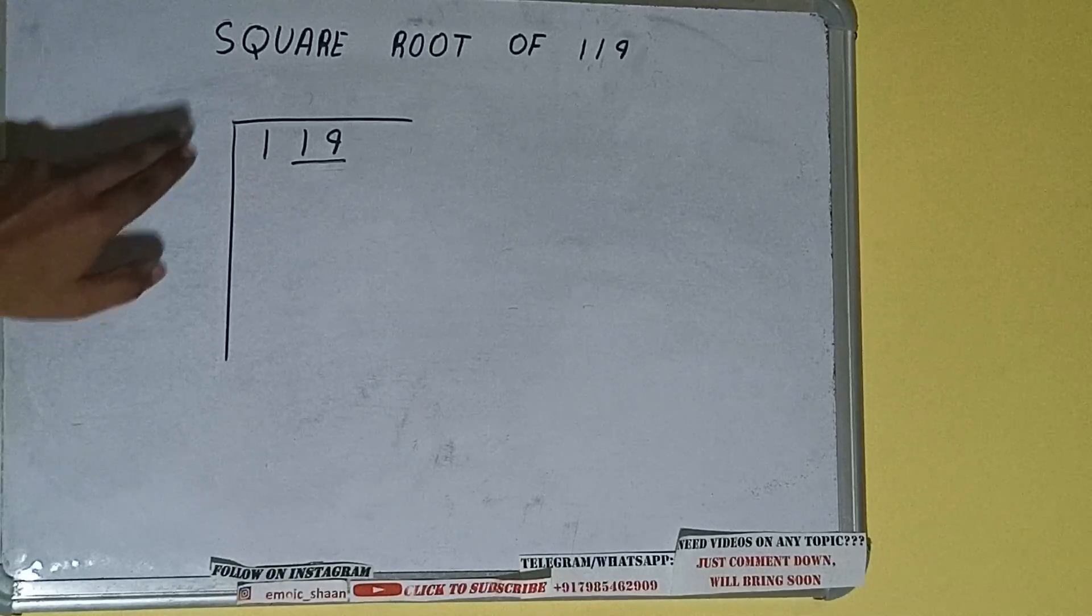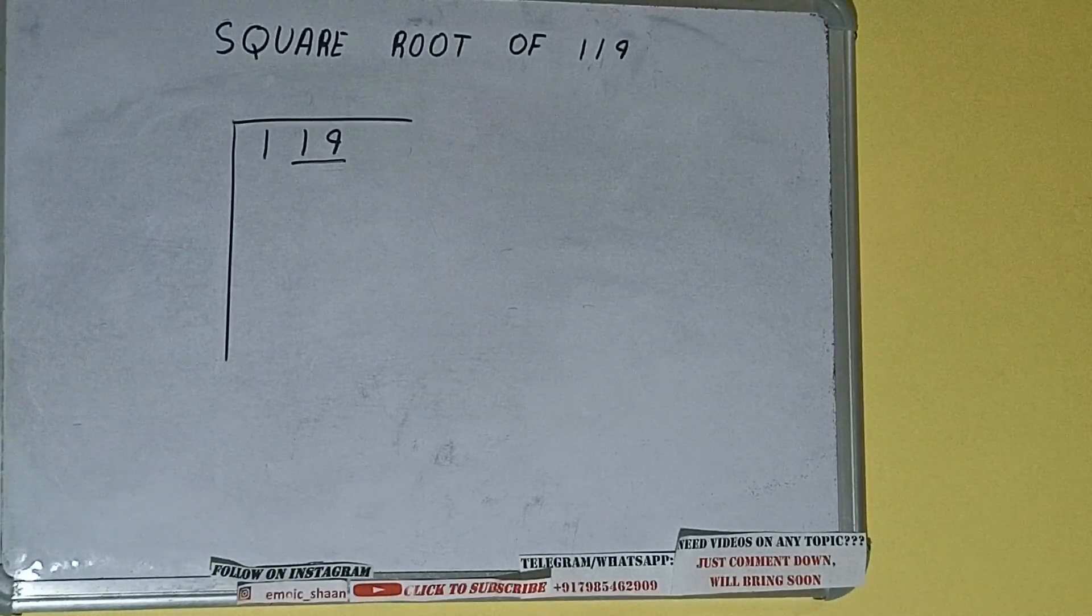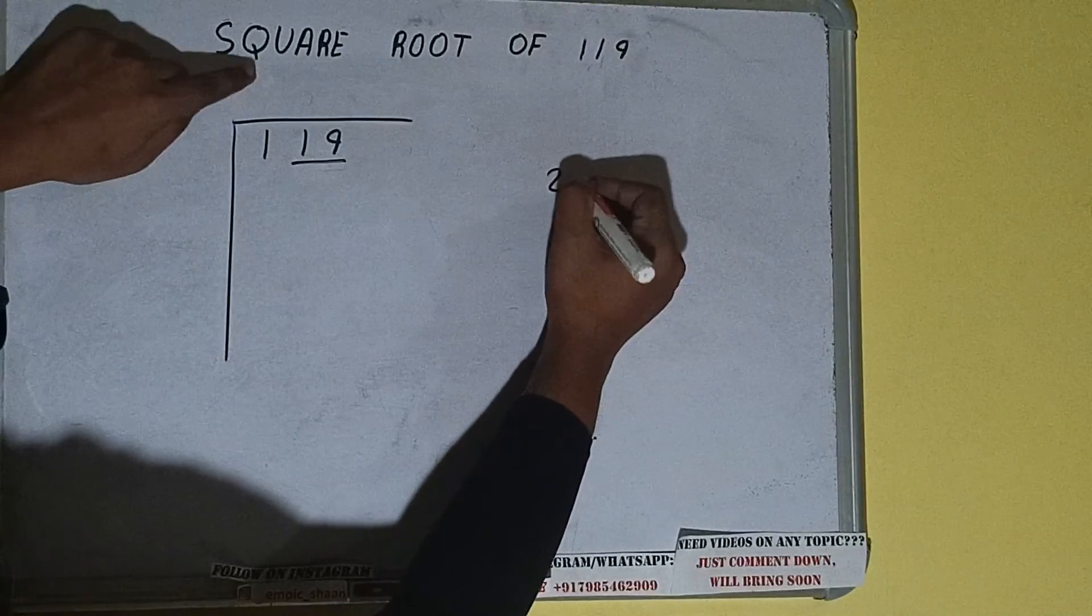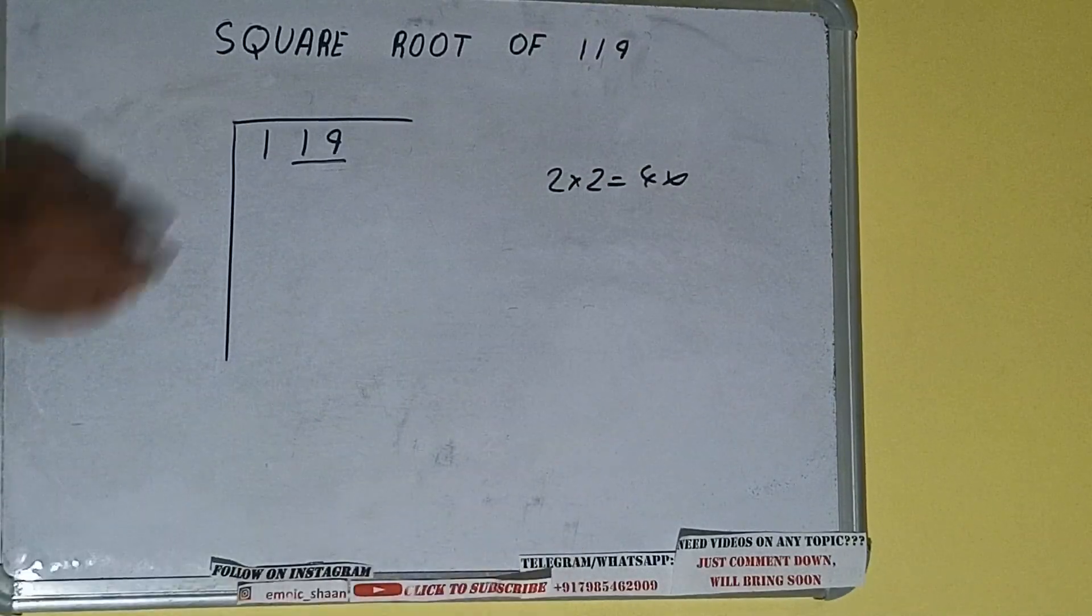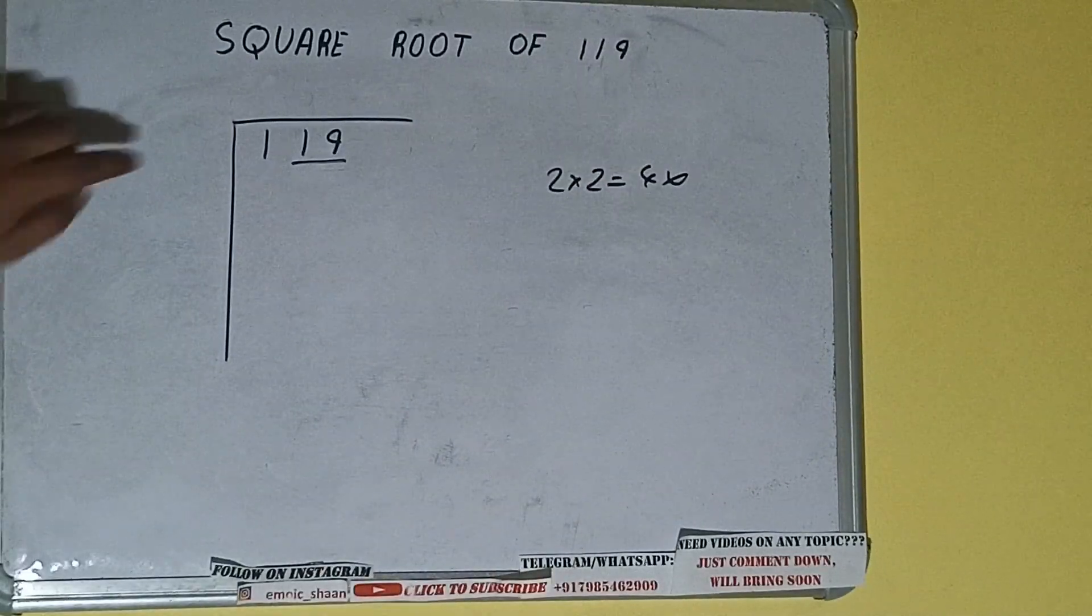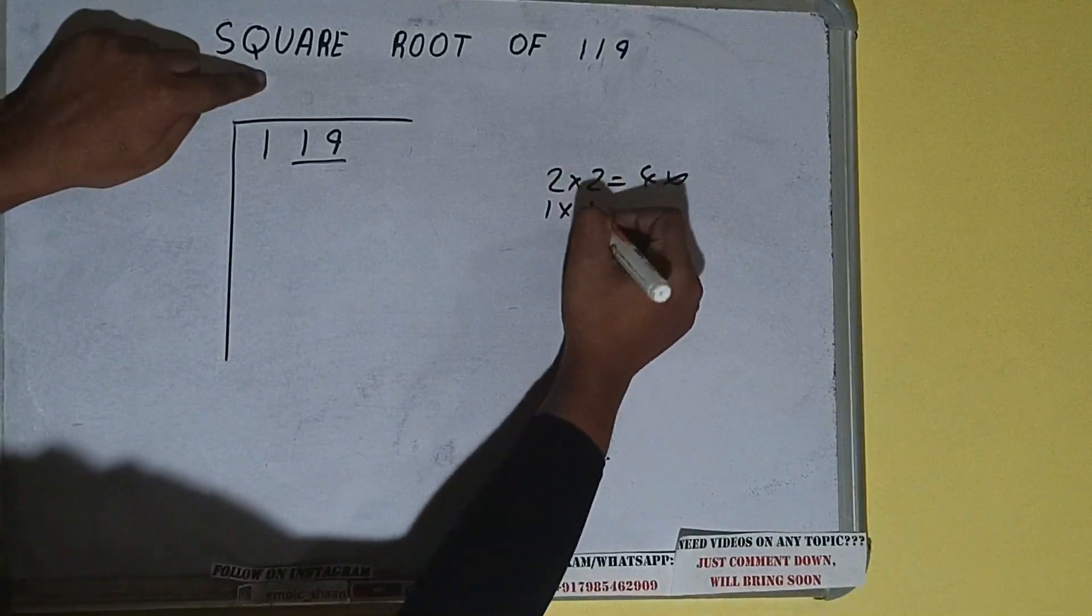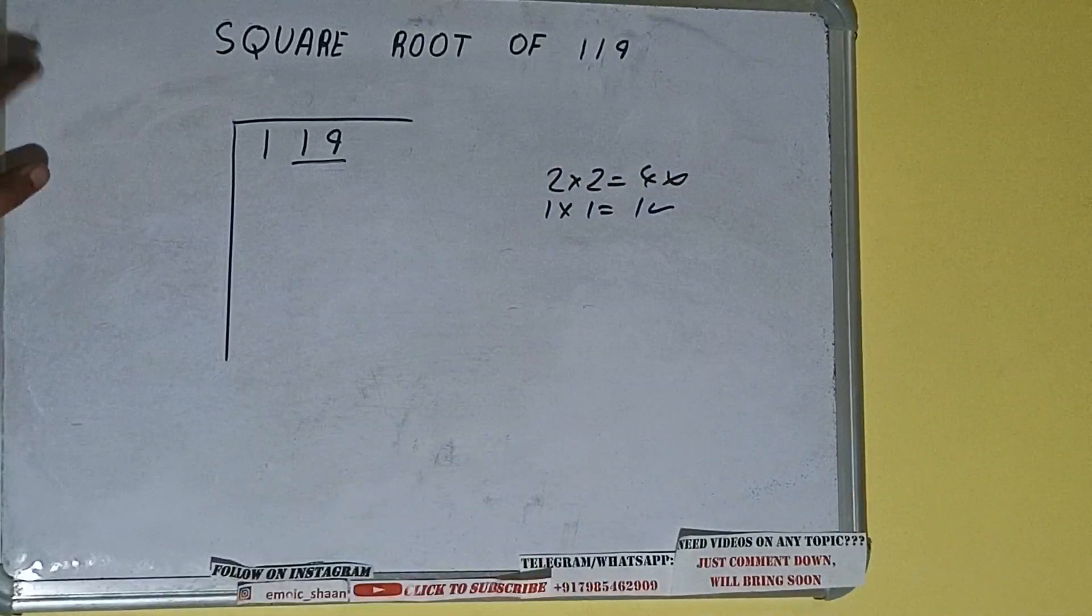The rule is whatever number we write here, we have to write here also. So if we write 2 here and 2 here it will be 4, which is greater than 1, so we cannot take it. If we write 1 here and 1 here it will be 1, which is good to take.